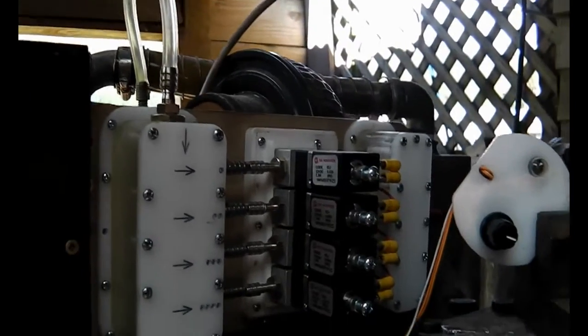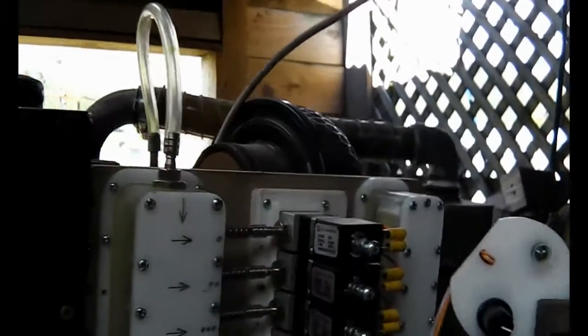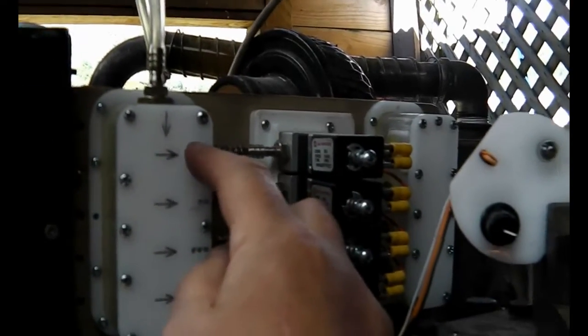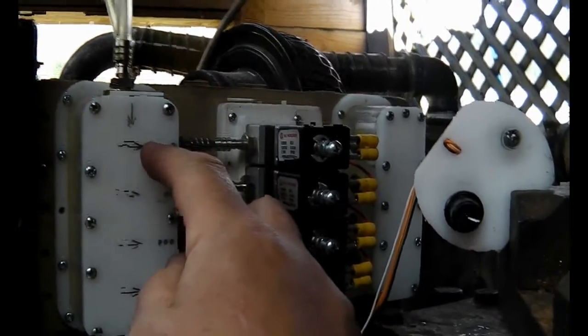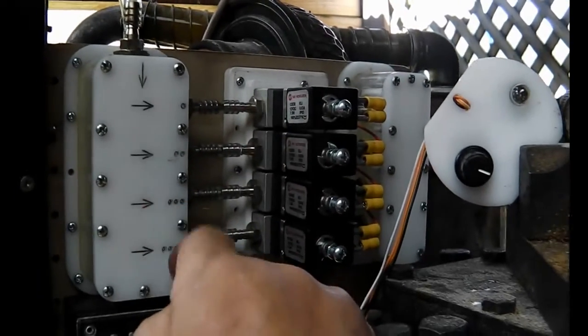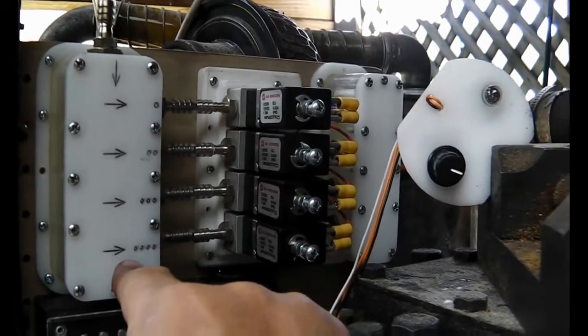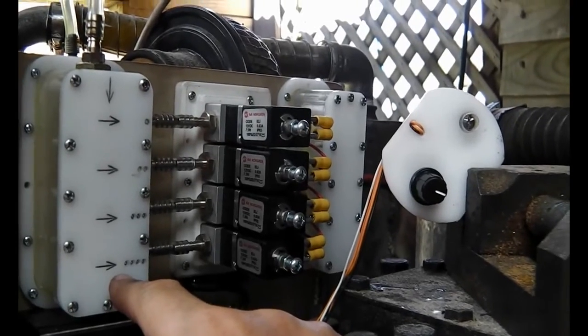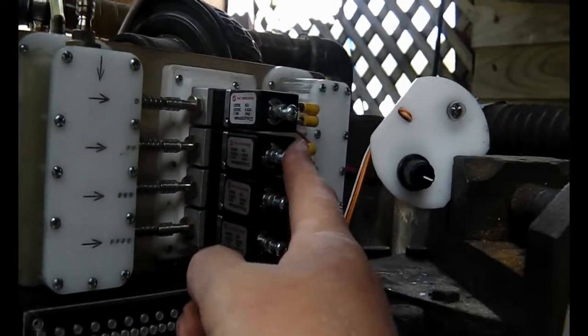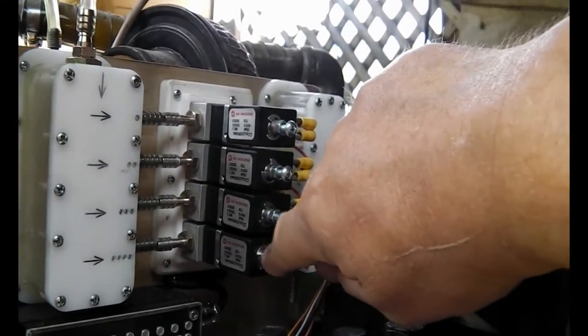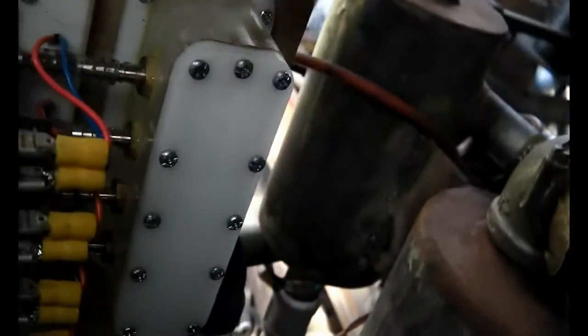What that does is it lets the engine pull air through at a particular rate as set by these valves. The smaller one lets air through at one unit per minute, this one at 2 units per minute, 4 units per minute, 8 units per minute. So let's say you wanted 10 units per minute of air coming in, the computer would activate this valve and that one, so you end up with 2 units plus 8 units of air.